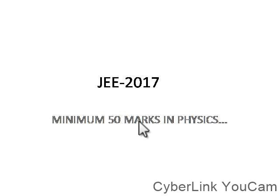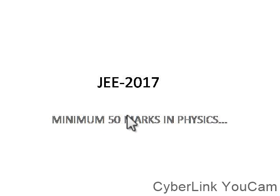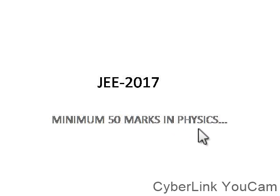Hello friends, you are watching this awesome videos and today we are going to learn how to score minimum 50 marks in physics in JWE. In JWE there are three subjects: physics, chemistry, and mathematics. Chemistry is overall an easy subject and mathematics is between easy and tough, but for all the students appearing for JWE, physics is the toughest subject.